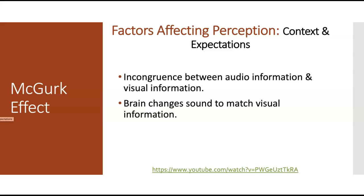In the McGurk effect video, you hear a sound while seeing different images of a person producing that sound. Sometimes they're saying 'bah,' and they change the way their mouth is moving. Depending on what you see, what you hear will then match the mouth movements — demonstrating that vision overrides the auditory information.